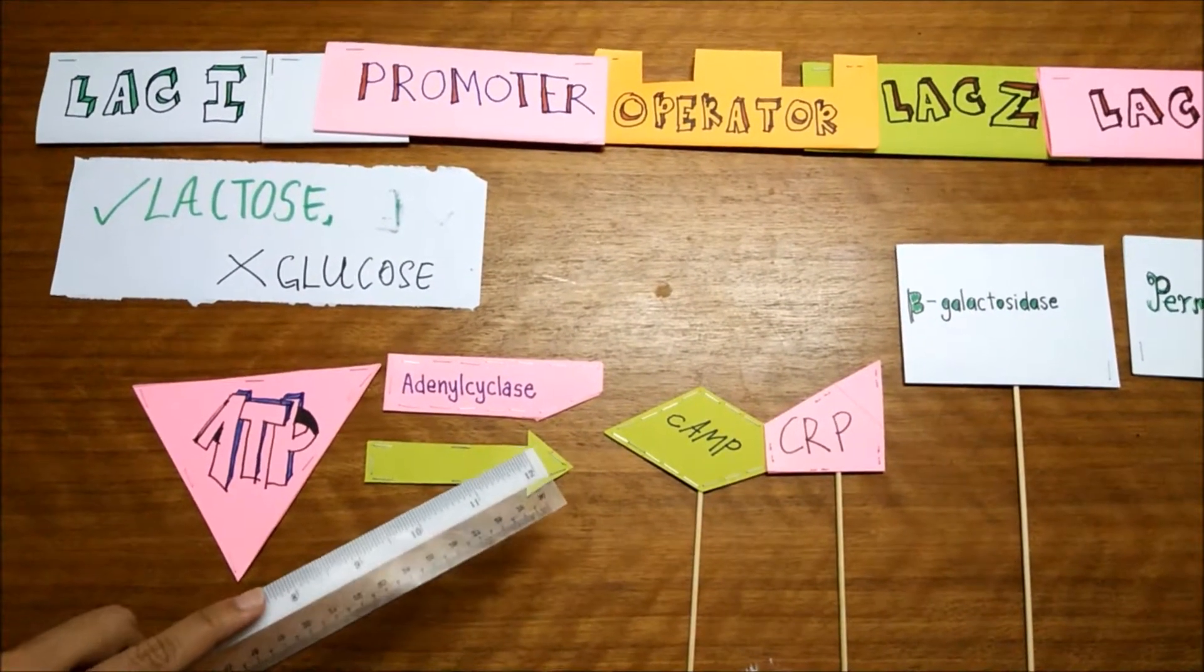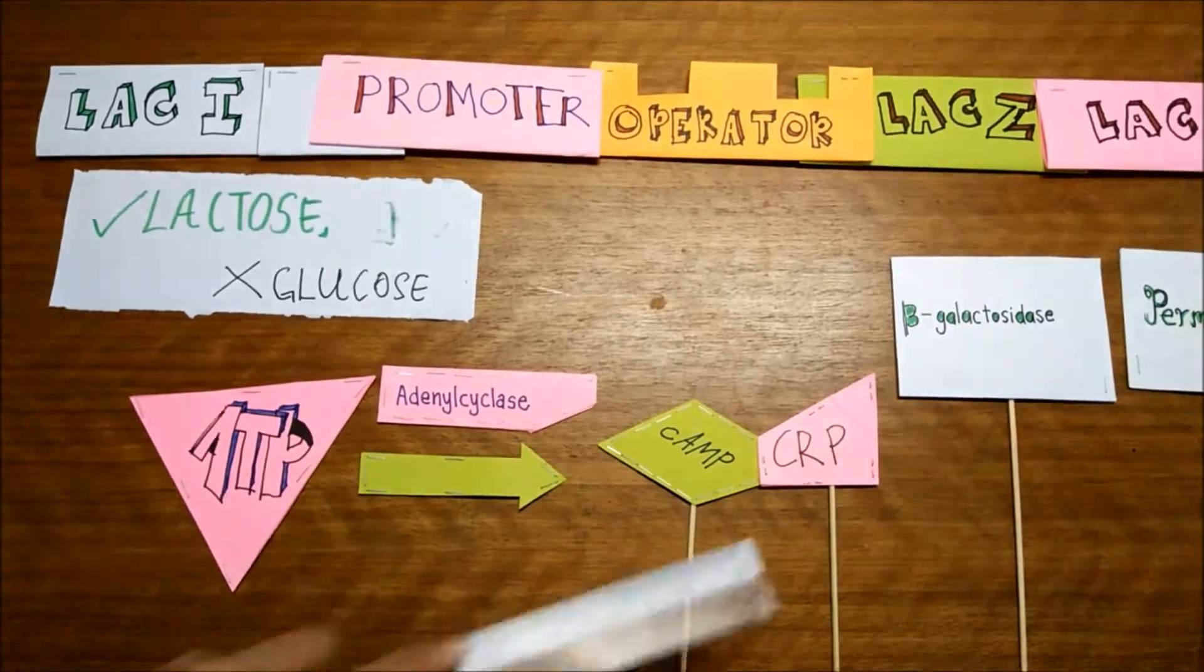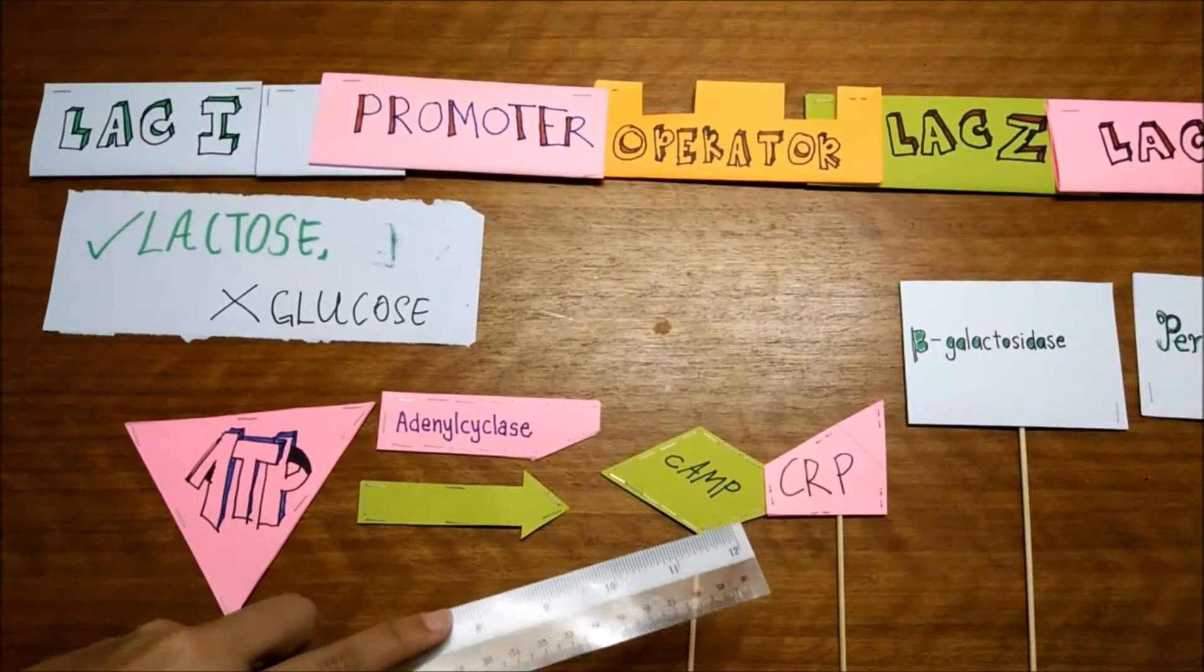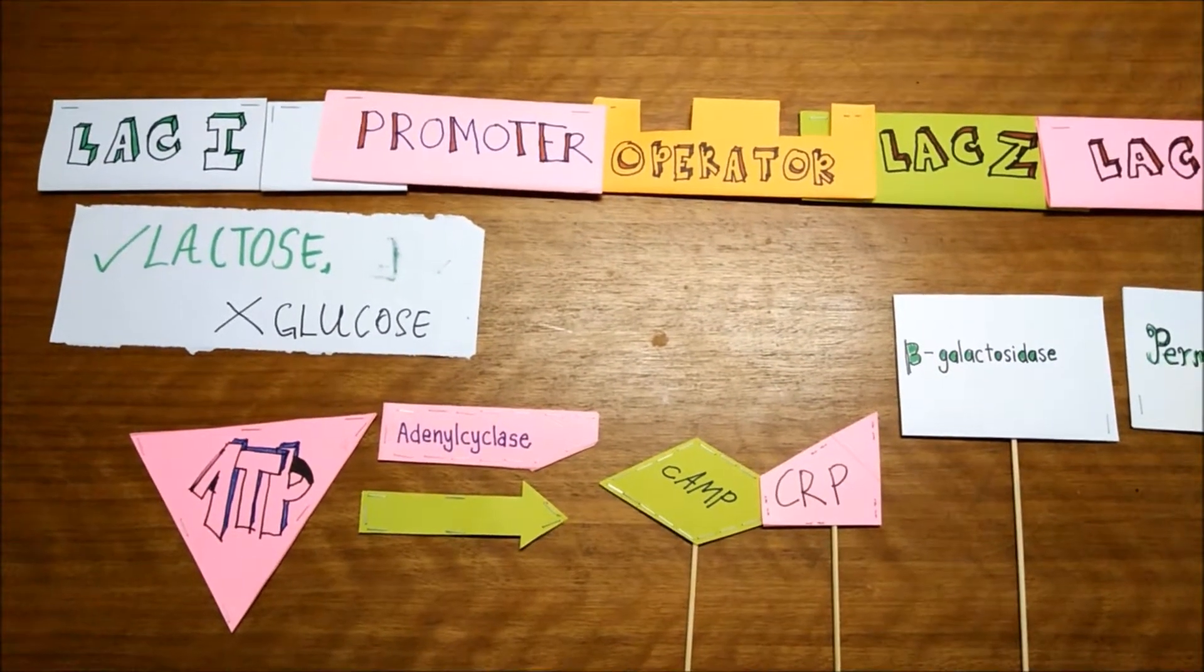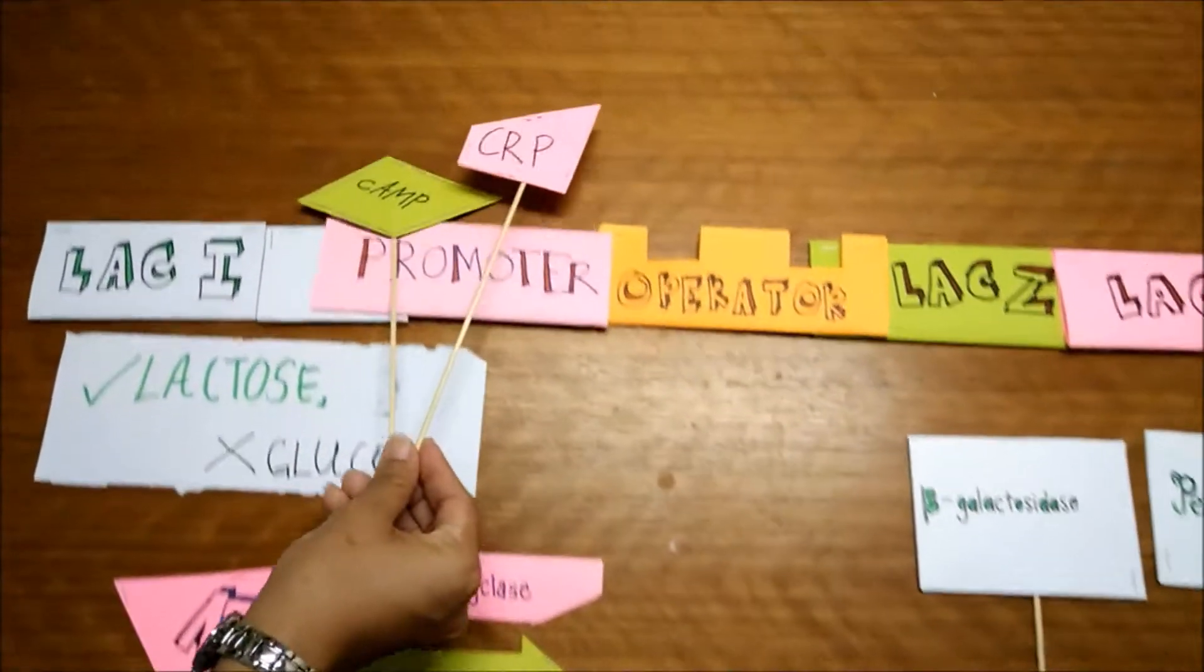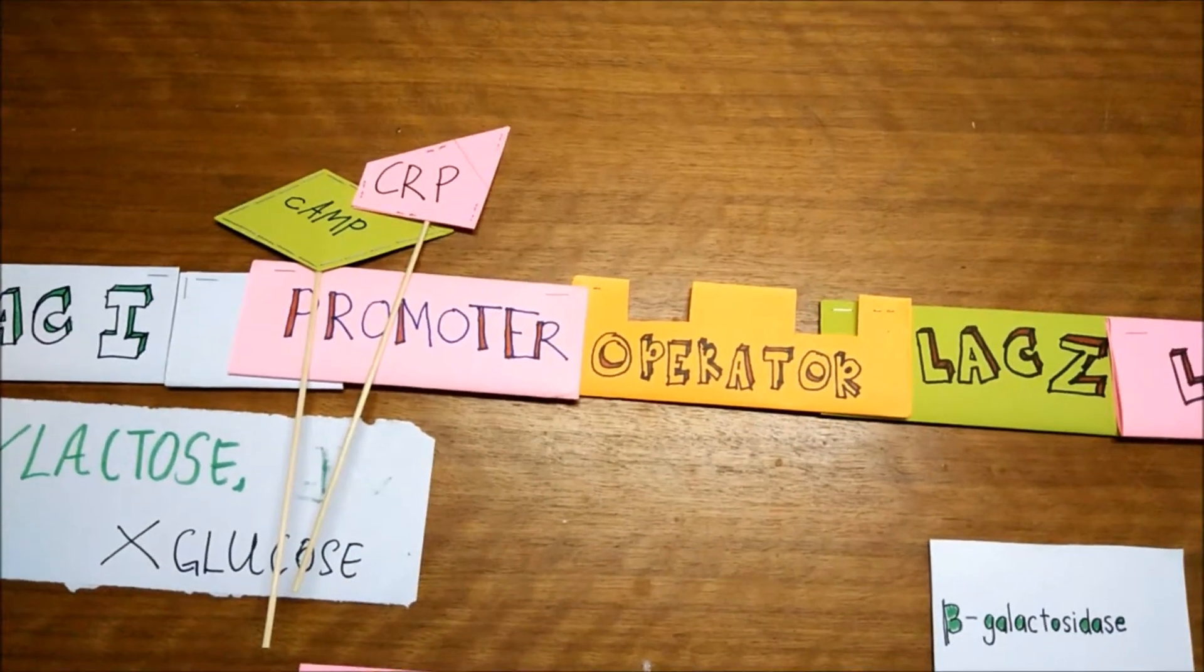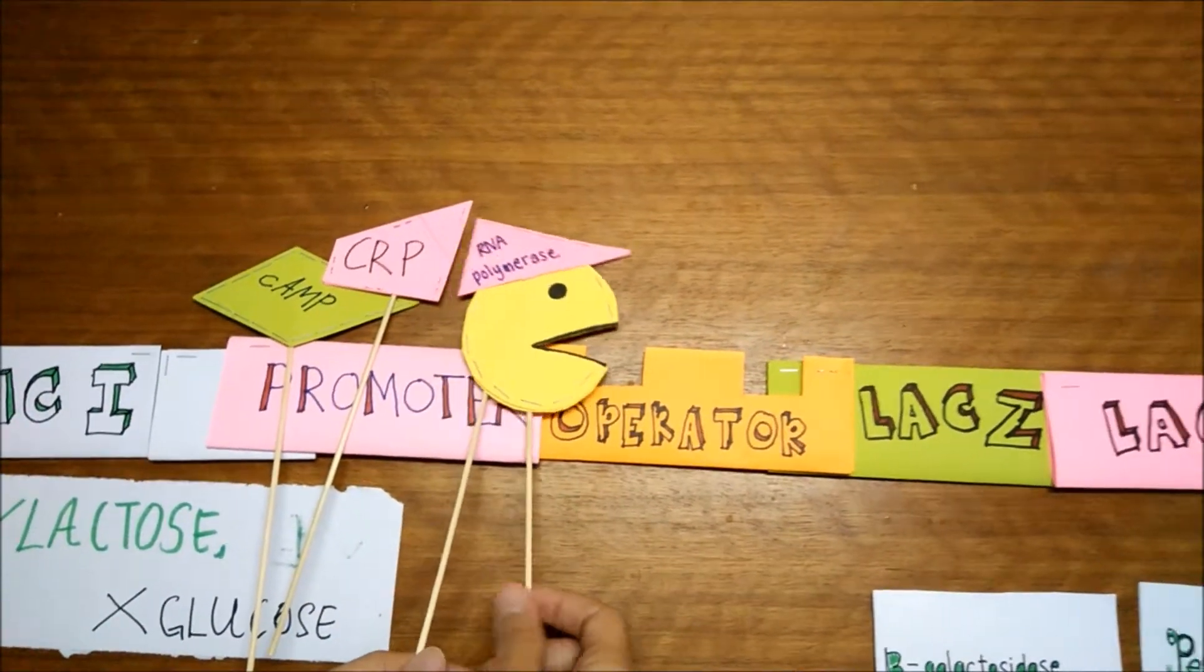Then cAMP will combine with CRP. It will form receptor protein. This receptor protein will bind to the promoter and helps RNA polymerase to transcribe the genes.